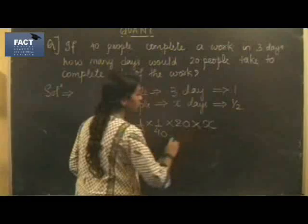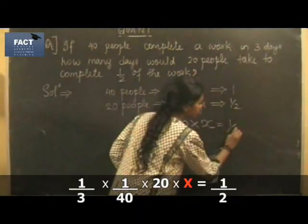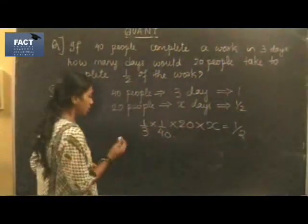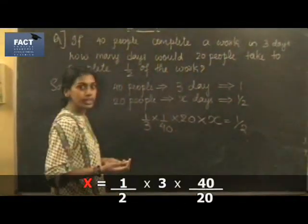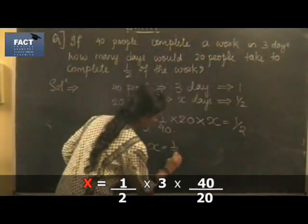If they work continuously for another x days, they would complete half of the work. This is the required equation. Solve this equation and you will end up getting your answer as 3 days.